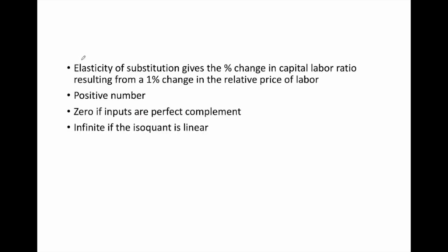Using the elasticity of substitution formula gives us a positive number that tells us the percentage change in the capital-labor ratio resulting from a 1% change in the ratio of input prices. A coefficient of zero means the inputs are perfect complements, indicated by the right angle isoquant. An infinite coefficient, where the isoquant is linear, indicates the case of perfect substitutes between capital and labor.